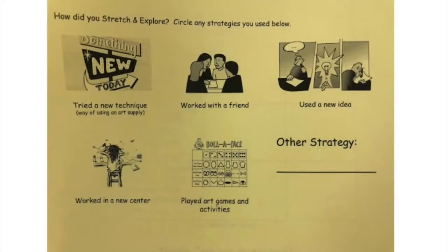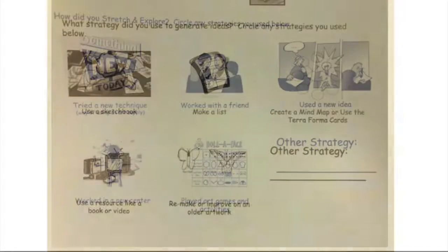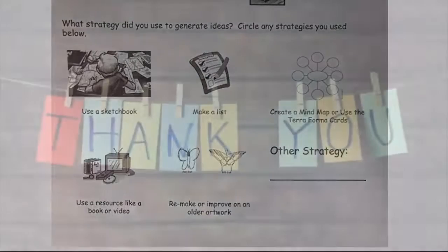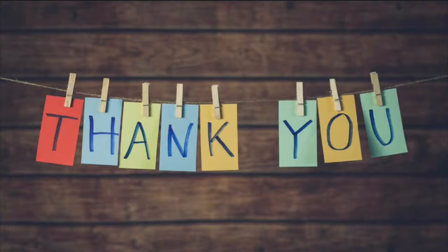The very last question is different for grades 2nd, 3rd, and grades 4th and 5th. Read the question, then circle the strategies you used. You may circle more than one strategy if you used more than one. If you circle other strategy, write the strategy you used on the blank line below it. Thank you all for watching and participating in our activities exploring where artists get their ideas.